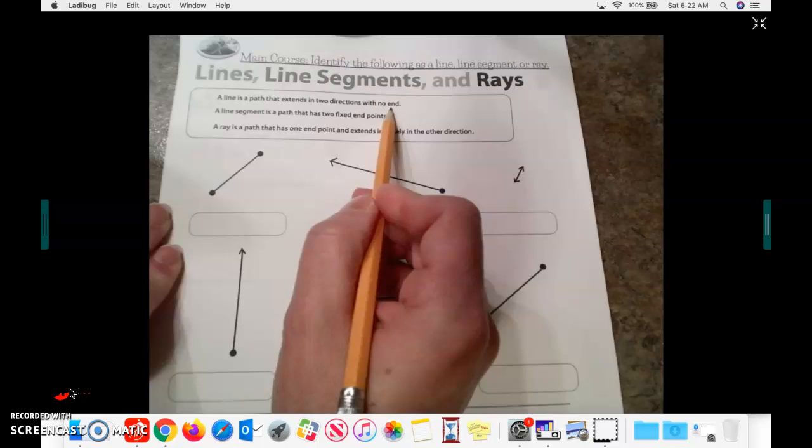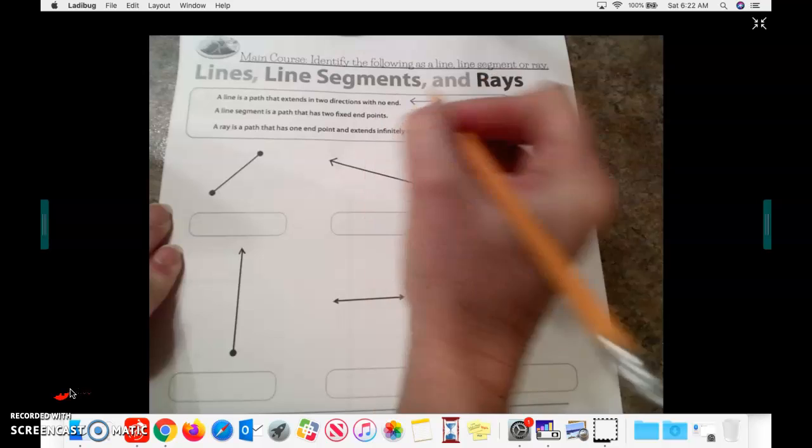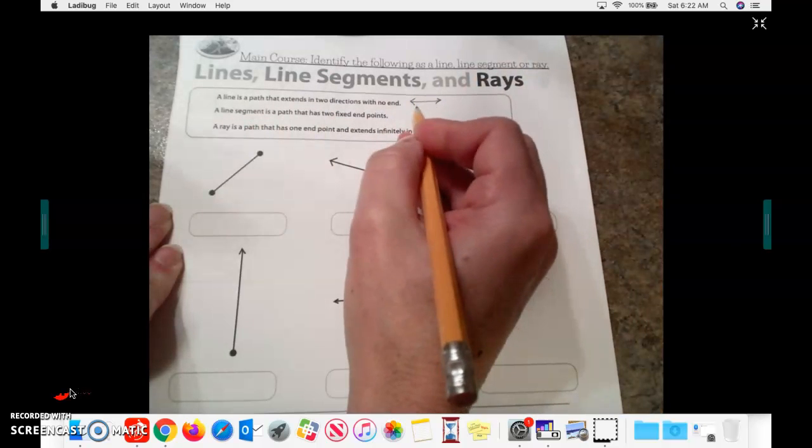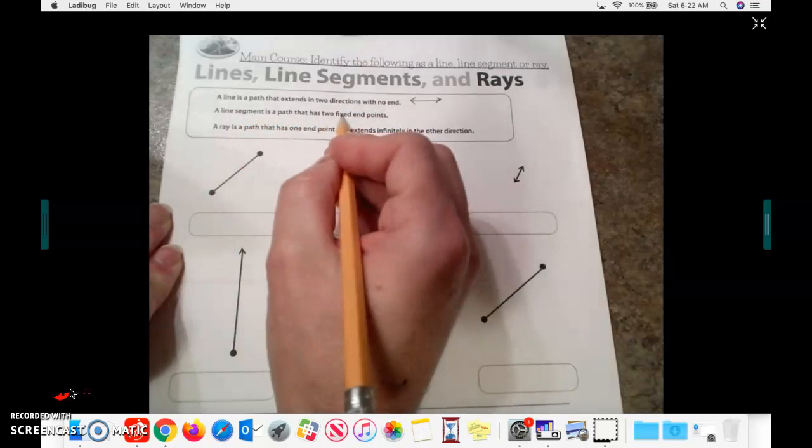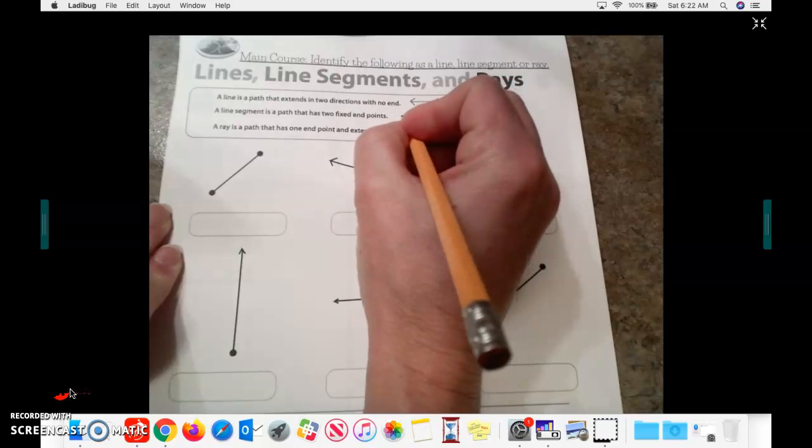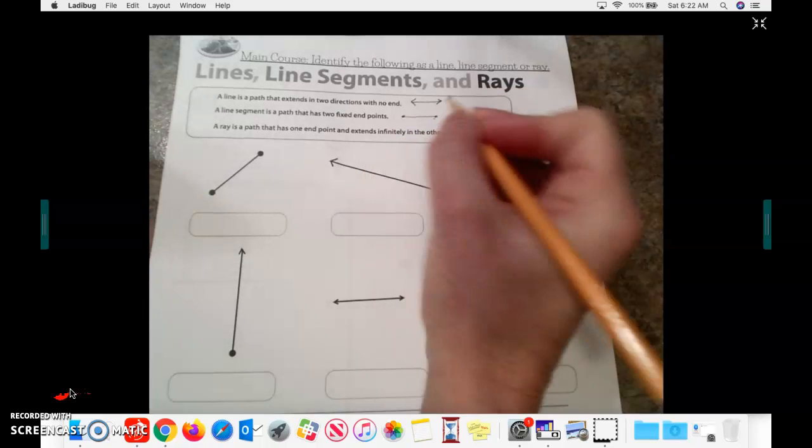So a line is a path that extends in two directions with no end. So a line is going to be indicated by having an arrow on each end. So a line would look something like this. Okay. A line segment has two fixed end points. So it means it has a set starting point and it has a set ending point. So it starts and it stops.